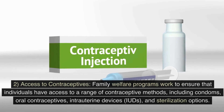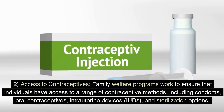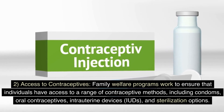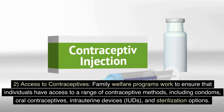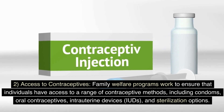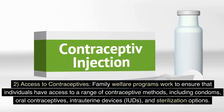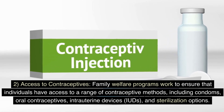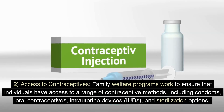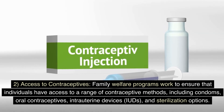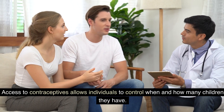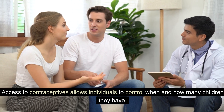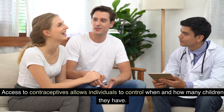2. Access to contraceptives. Family welfare programs work to ensure that individuals have access to a range of contraceptive methods, including condoms, oral contraceptives, intrauterine devices (IUDs), and sterilization options. Access to contraceptives allows individuals to control when and how many children they have.